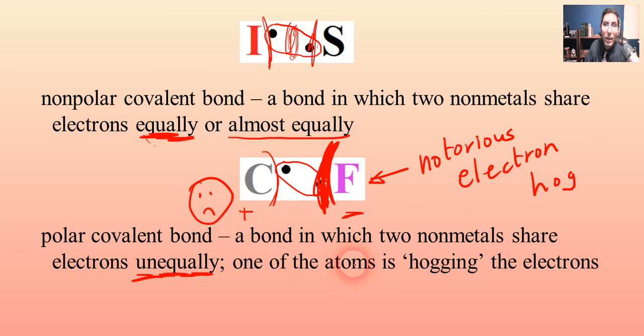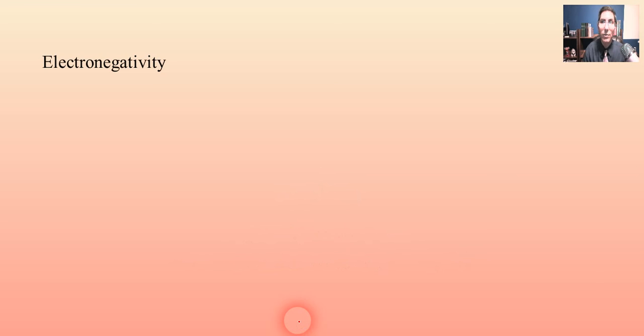So we have these two types of bonds, non-polar and polar. And this raises the question, how do we know? How do we know that, for example, the iodine and the sulfur, somehow I was able to predict that that was going to be non-polar, but that the carbon and fluorine would make a polar covalent bond? How did I know that?